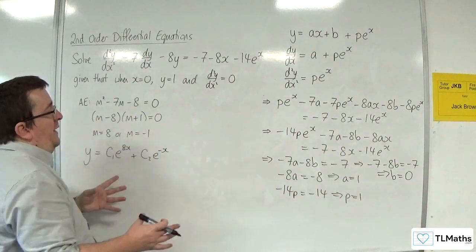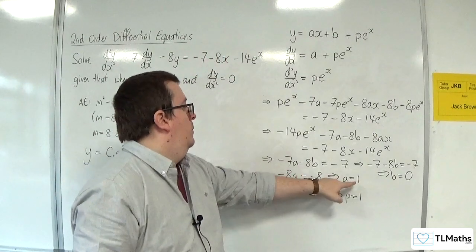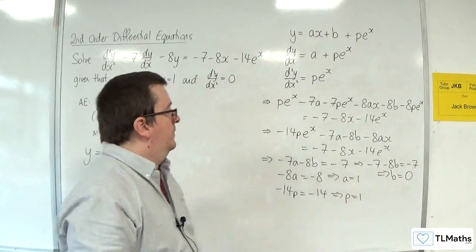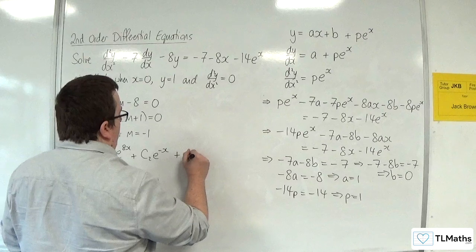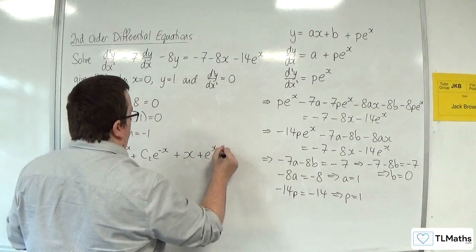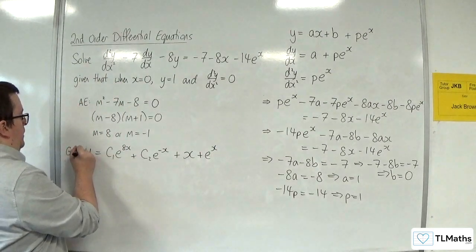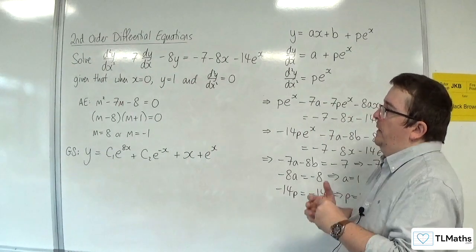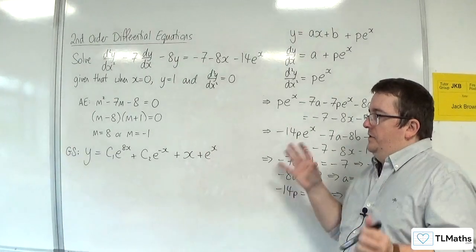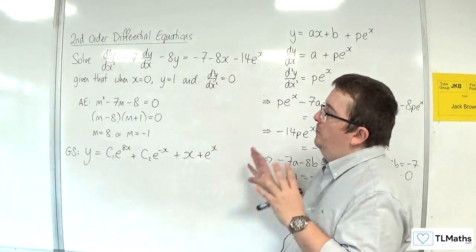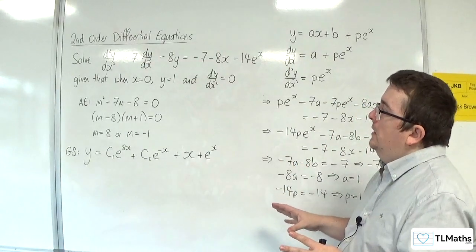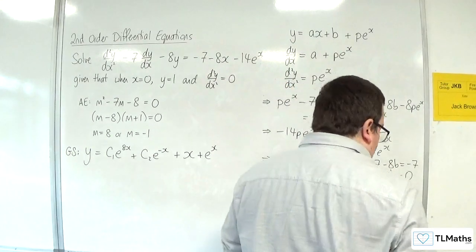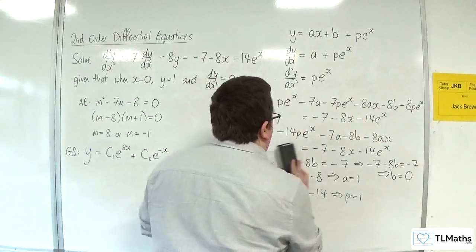So the particular integral is y = 1 lot of x + 0 + 1 lot of e^x. So x + e^x. And so this is my general solution. So now I need to find the particular solution.